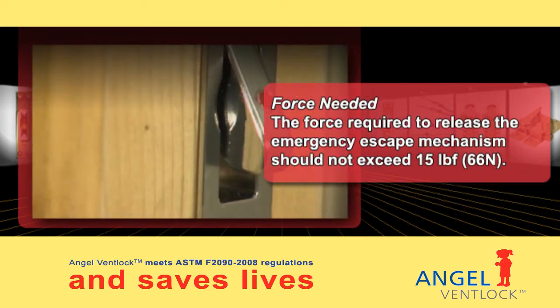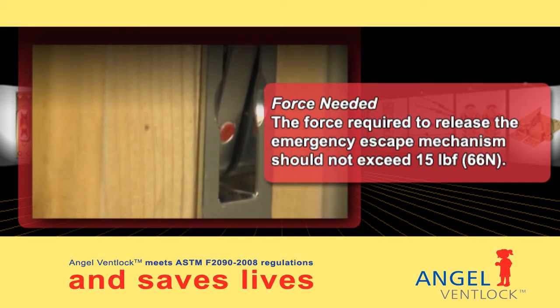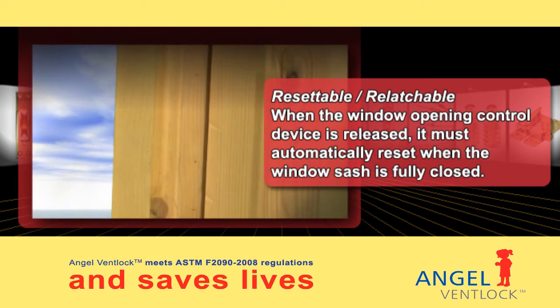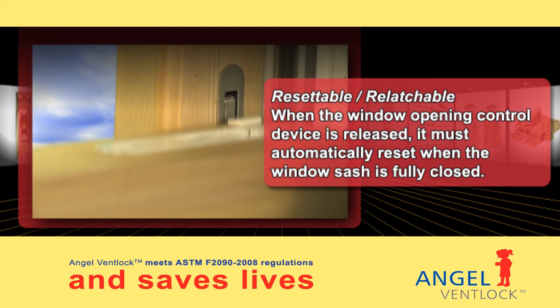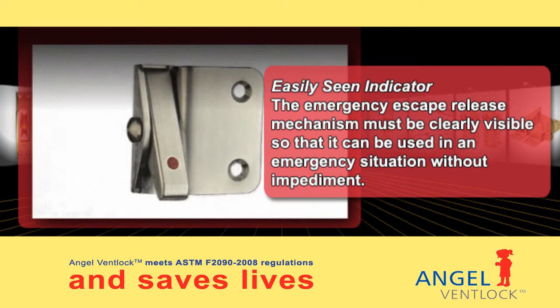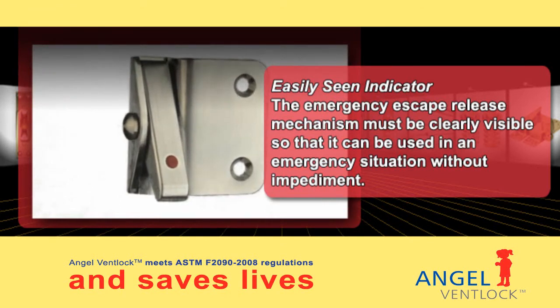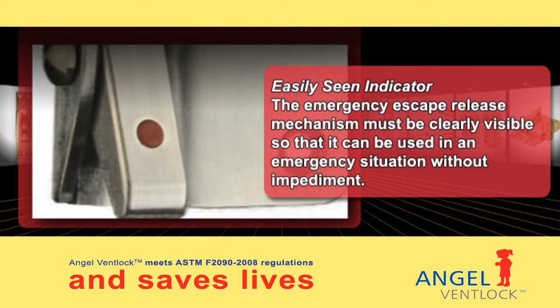The force required to release the emergency escape mechanism should not exceed 15 lbs. When the window opening control device is released, it must automatically reset when the window sash is fully closed. The emergency escape release mechanism must be clearly visible so that it can be used in an emergency situation without impediment.